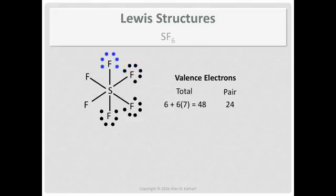And we add three more pair to each of the fluorines. Keeping track of our count as we go through this. Okay, so we've satisfied the octet rule for the surrounding atoms.